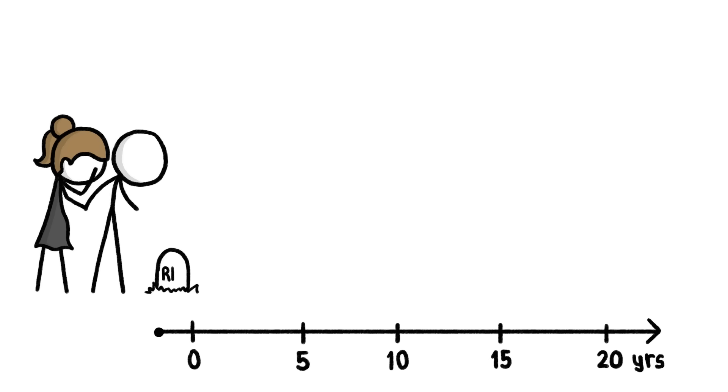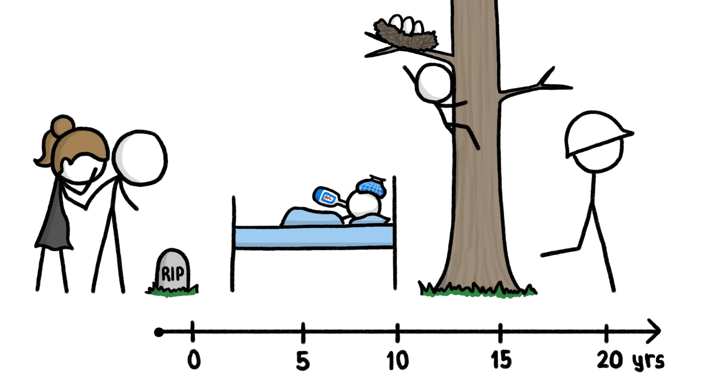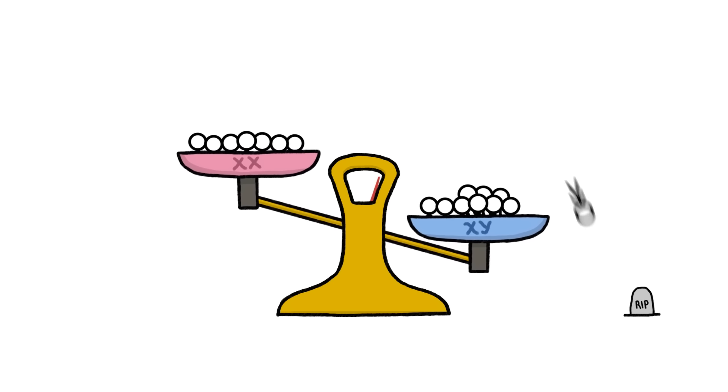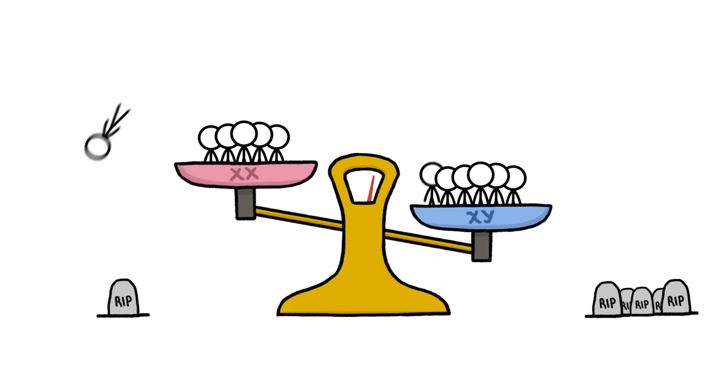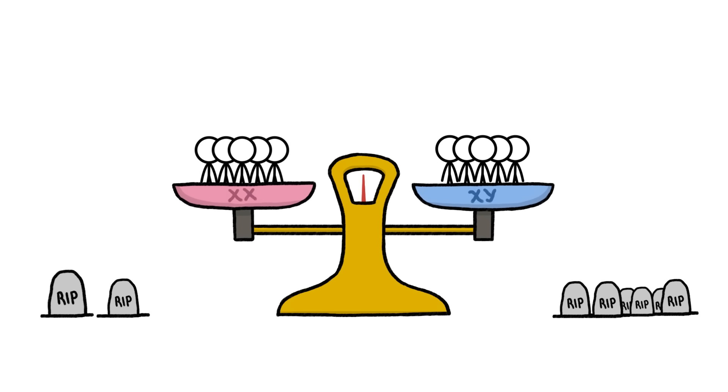Male fetuses are much more likely to be miscarried or stillborn than female fetuses. And boys that do make it out of the womb suffer more fatal diseases, take more mortal risks, and fall prey to more violence than girls. So by the time kids grow up and reach baby-making age, the ratio of males to females is just about one to one.